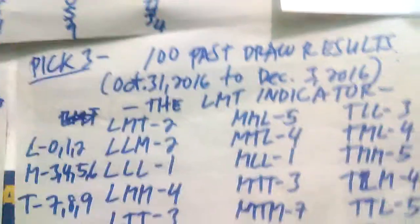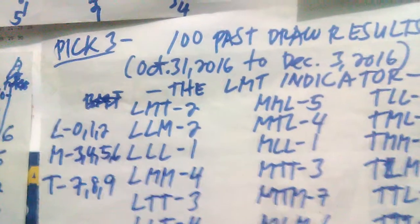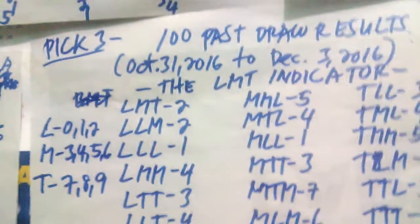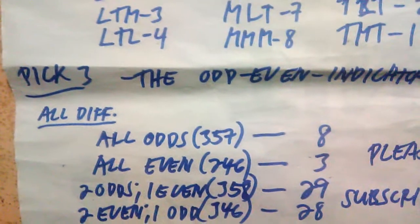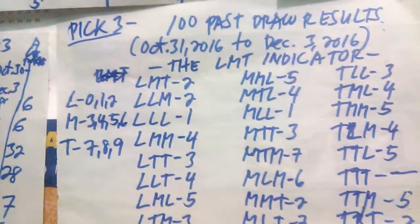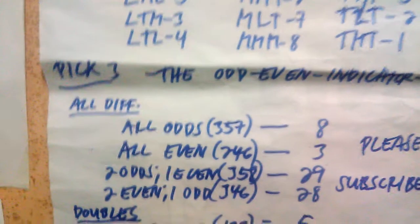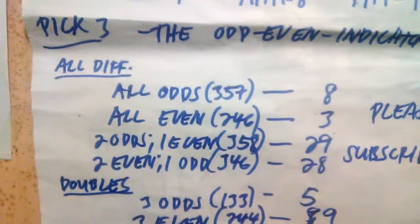Now, aside from classifying draw results under the LMT indicator, each combination should also be classified under what I call the odd-even indicator. Using the same past draw results from October 2016 to December 3, 2016, you have to classify each combination in the draw results as follows.